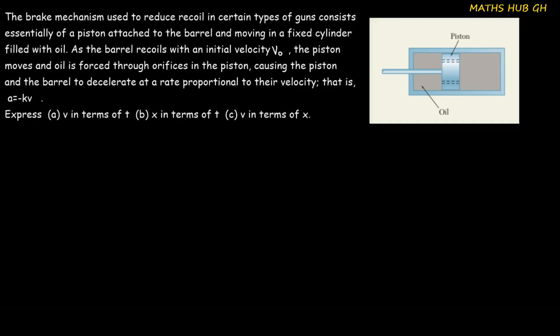Hello and welcome to this tutorial. In this lesson you are going to solve this question on a hardware screen. The question says: the brick mechanism used to reduce recall in certain types of guns consists essentially of a pasting attached to the barrel and moving in a fixed cylinder filled with oil. As the barrel recalls with an initial velocity V-naught, the pasting moves and oil is forced through the orifices in the pasting, causing the pasting and the barrel to decelerate at a rate proportional to their velocity.